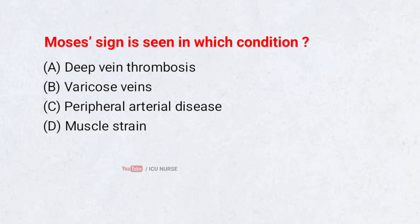Moses' sign is seen in which condition? A. Deep vein thrombosis. B. Varicose veins. C. Peripheral arterial disease. D. Muscle strain. Correct answer: A.